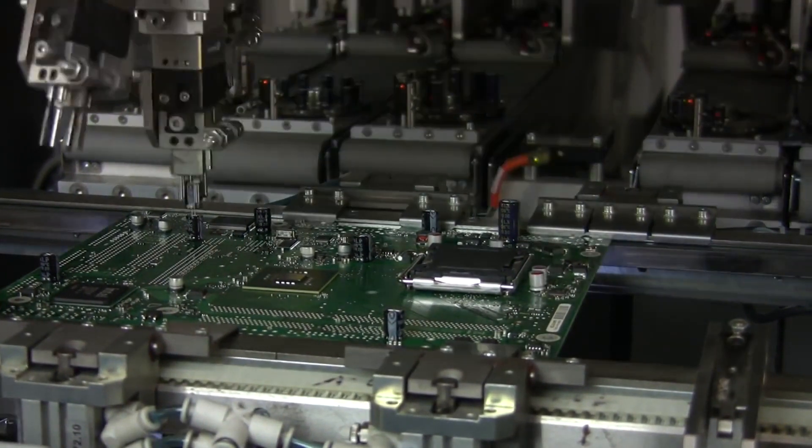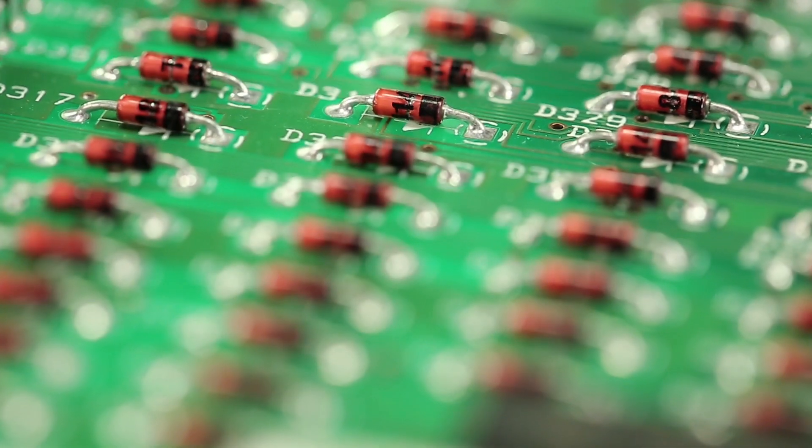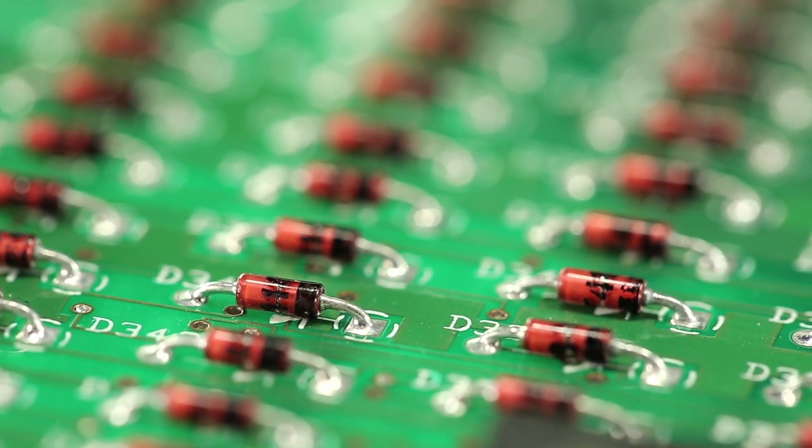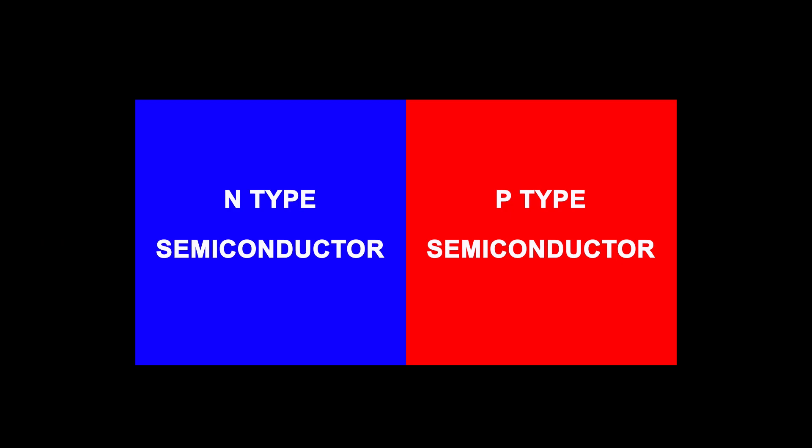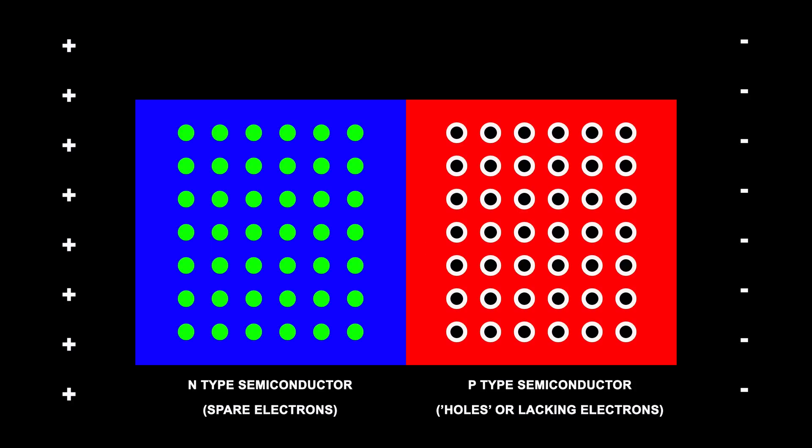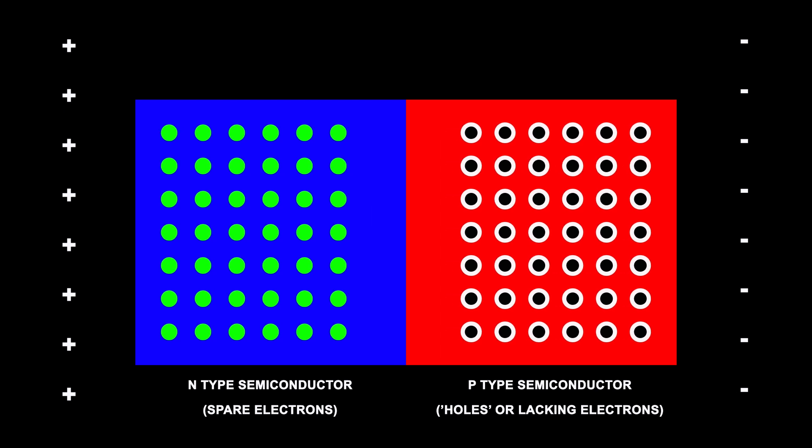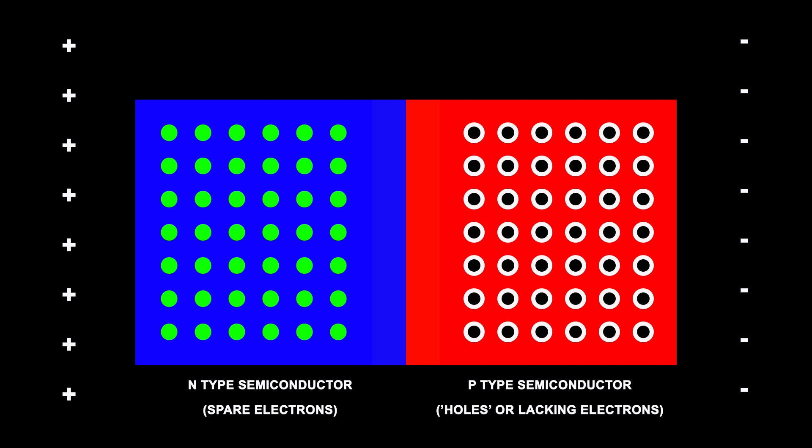We're going to start our exploration of transistors by first looking at a diode which is the simplest semiconductor device. The diode allows current to flow through it in one direction but not in the other direction. The way this works is when you put an n-type and a p-type silicon together as shown in this diagram. Even though the n-type silicon by itself is a conductor and the p-type silicon by itself is a conductor, the combination shown in the diagram does not conduct any electricity. The negative electrons in the n-type silicon get attracted to the positive terminal of the battery. The positive holes in the p-type silicon get attracted to the negative terminal of the battery and so no current flows across the junction.